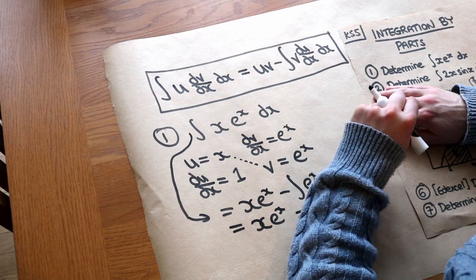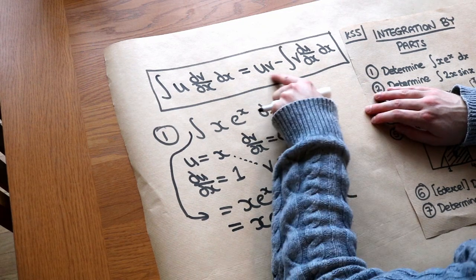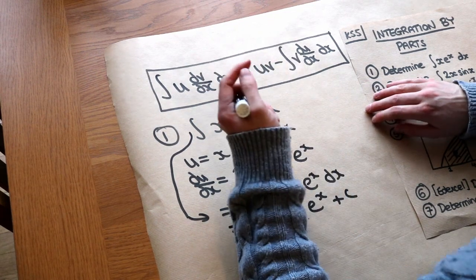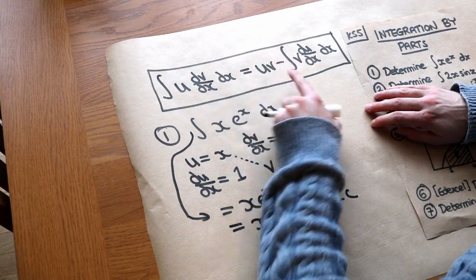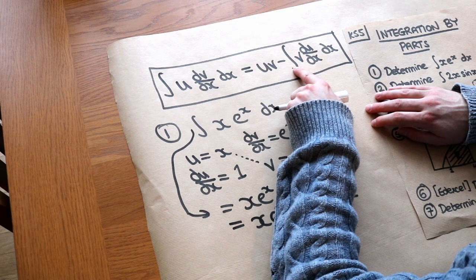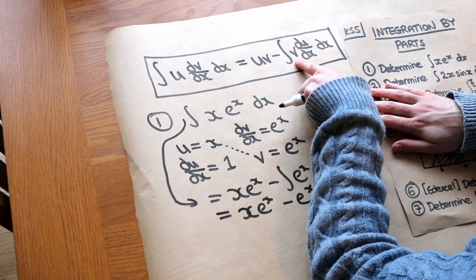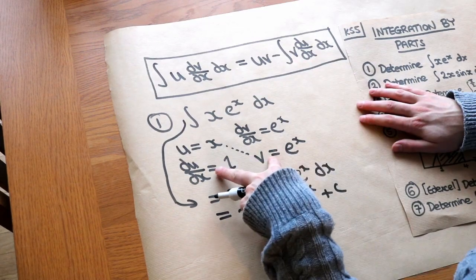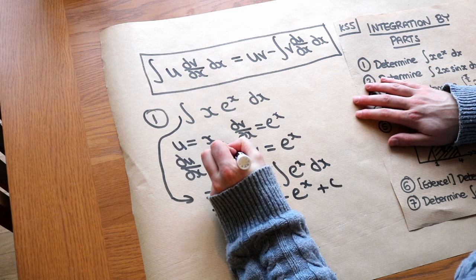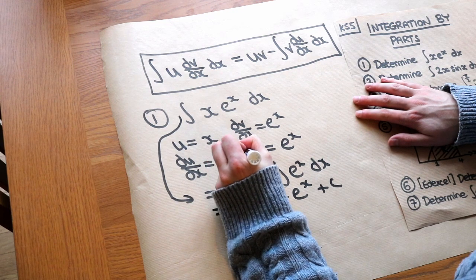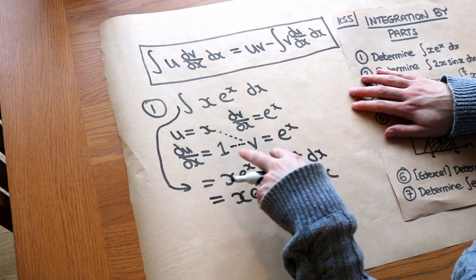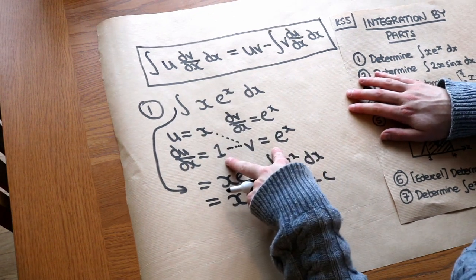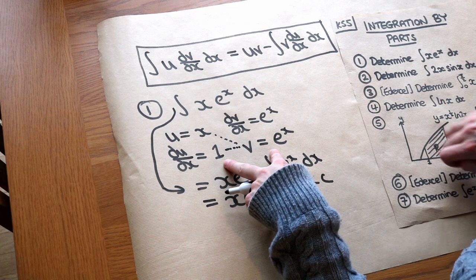The way I remember this formula is 'ultraviolet light' — uv is short for ultraviolet light — minus the integral of the two new things on the second row. Notice the v and the du/dx are the things on the second row, so we integrate the product of those two things.